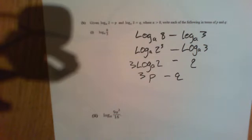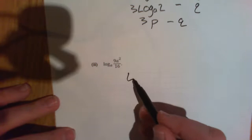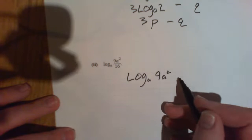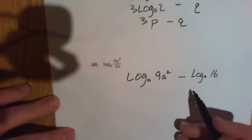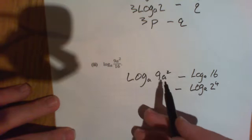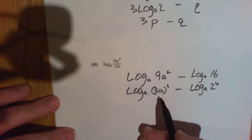Alright. Let's try the second one. Log to the base a of 9a squared over 16. Okay. We have rules for these already. So let's go at it. Log to the base a of 9a squared minus log to the base a of 16. That's a power of 2. That's log to the base a of 2 to the power of 4. Well, this is something squared. That's a squared number and that's a squared number. So that's the log to the base a of 3a squared.